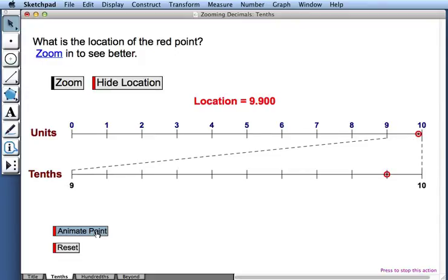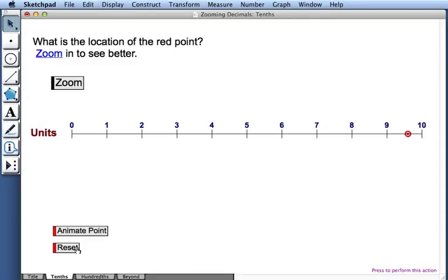To stop the animation, I'll press animate point again. Now I'll press reset to return to just a single number line. And to create a new challenge for myself, I'll simply drag this red point anywhere I like along the number line.